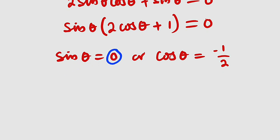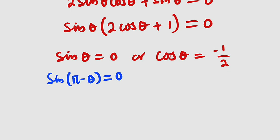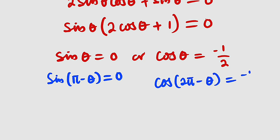You should know that sine is positive in the first and second quadrant, so we can also obtain another solution in the second quadrant — sine of (π minus θ) will still give us zero. For cosine, negative values occur in the second and third quadrants, so cosine of (2π minus θ) will still give us negative one divided by two. We solve these two equations separately.